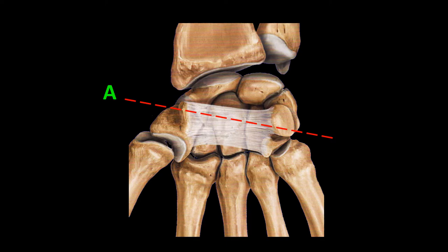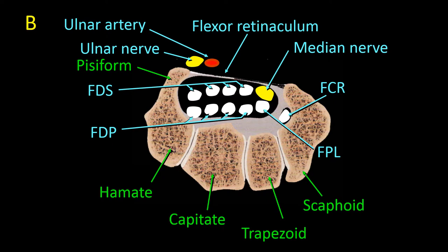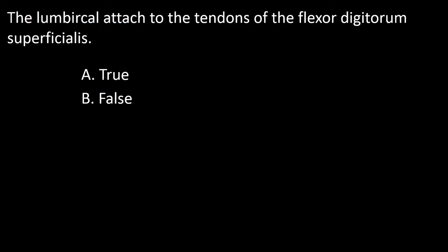Now, if instead of cutting at level A we cut at level B, which is more distal, we will find more or less the same structures with the exception that the ulnar nerve and artery are no longer within Guyon's canal. So the answer to this question is B — false, the lumbricals are attached to the flexor digitorum profundus tendons, not the superficialis.